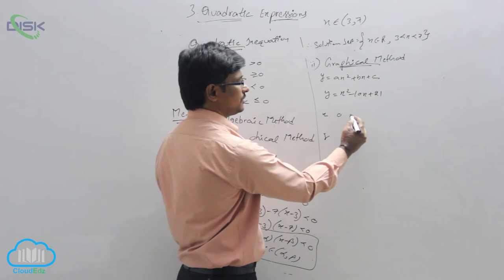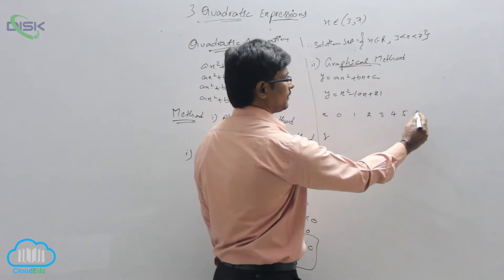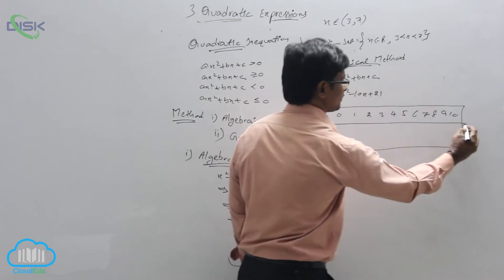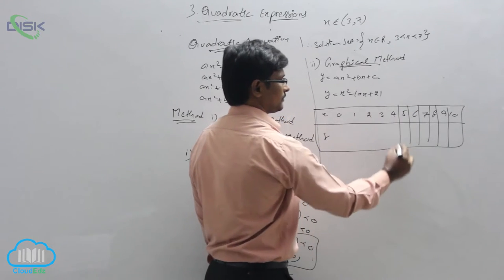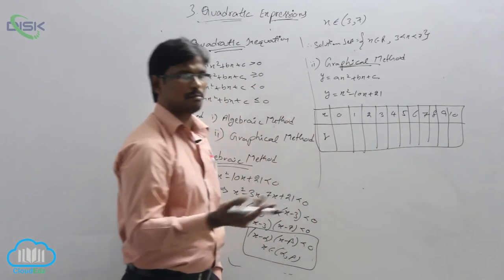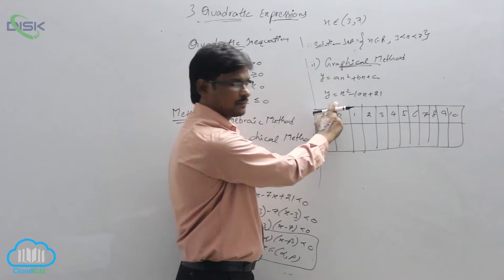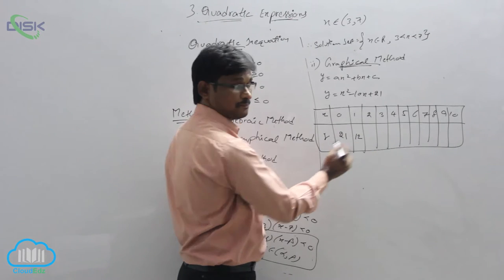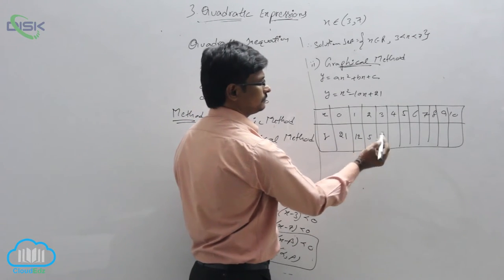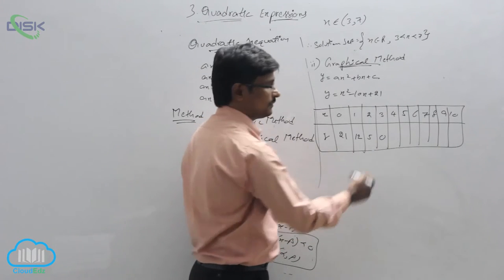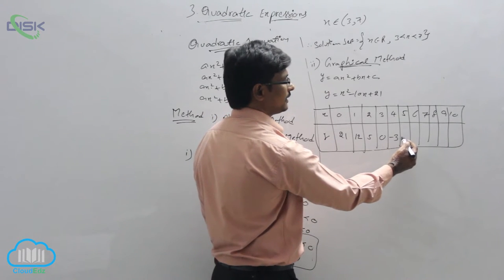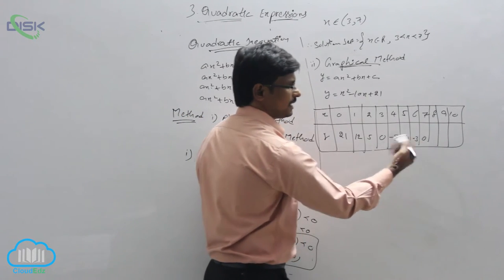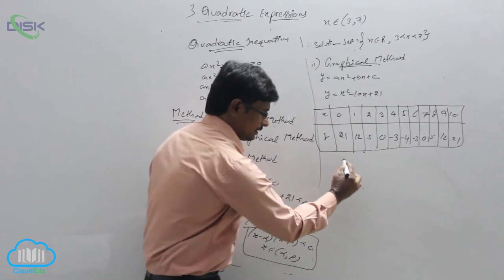Consider x values from 0 onwards: 0, 1, 2, 3, 4, 5, 6, 7, up to 10. Find out the y values. If x equals 0, y is 21. If x equals 1, y is 12. Next, x equals 2, y is 5. Then y equals 0 at x equals 3. At x equals 4, next value. At x equals 5, y is minus 4. At x equals 6, y is minus 3. At x equals 7, y is 0. Then continuing: 5, 12, 21.